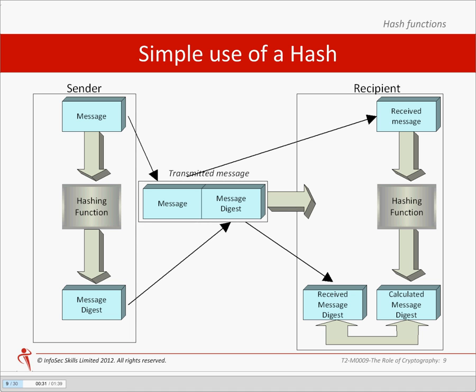The sender then sends the message plus the message digest to the recipient. On receipt, the recipient takes the message and calculates a message digest, then compares the received digest with the digest they have just calculated. If during transmission the data is changed or manipulated, the result is a totally different digest — this could be as trivial as adding an extra space or a comma.